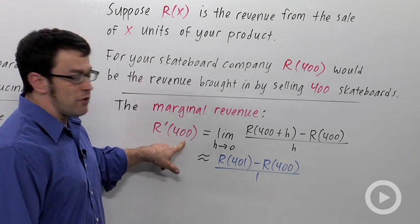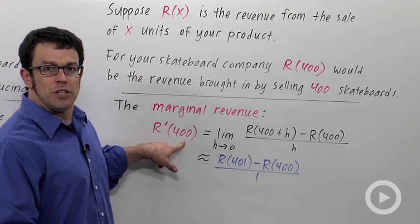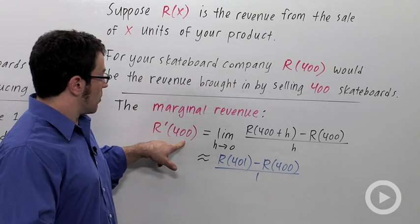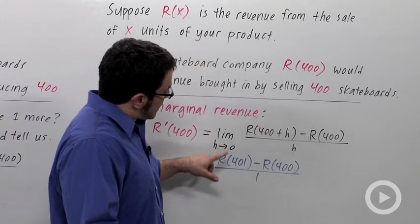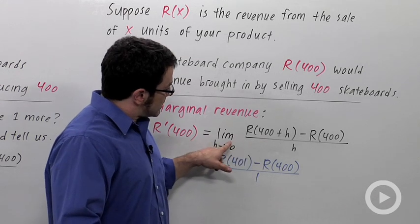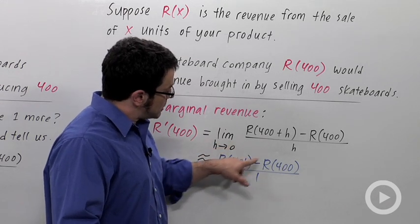The marginal revenue at 400 would tell you about how much you would get from selling that 401st skateboard. So here again is the definition of the derivative. And here again, I've approximated this limit by plugging in h equals 1.